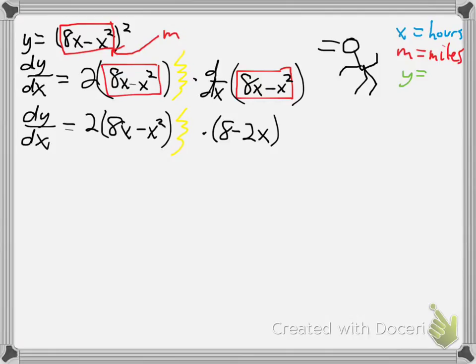We'll come back to y. Let's start with the relationship between m and x. We've defined m to equal this box, so m equals what was in the box: 8x minus x squared.